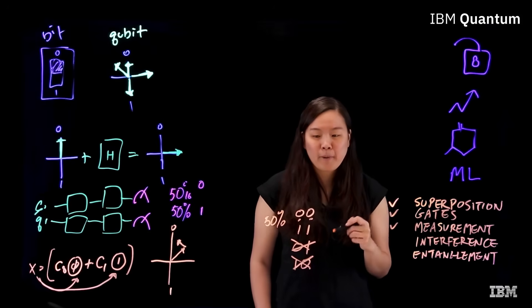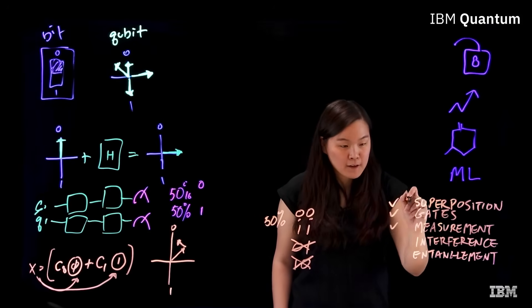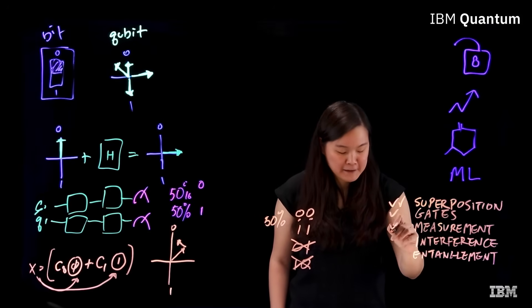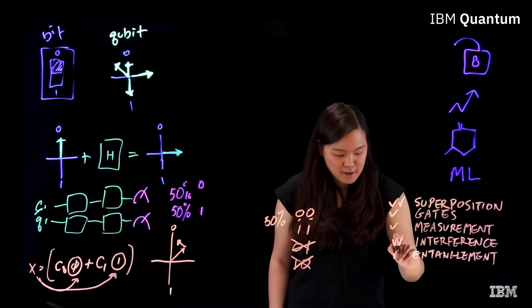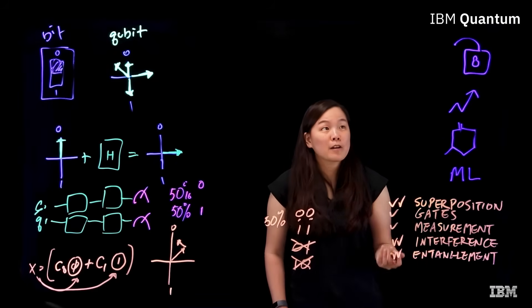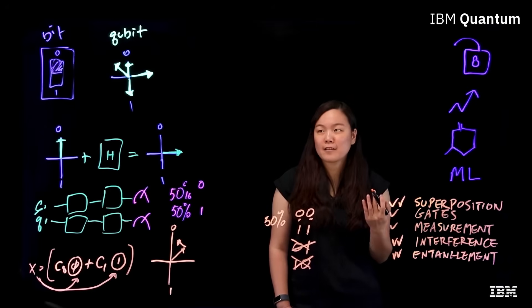So with the combined power of superposition, interference, and entanglement, quantum computers can solve things that classical computers simply cannot do today.